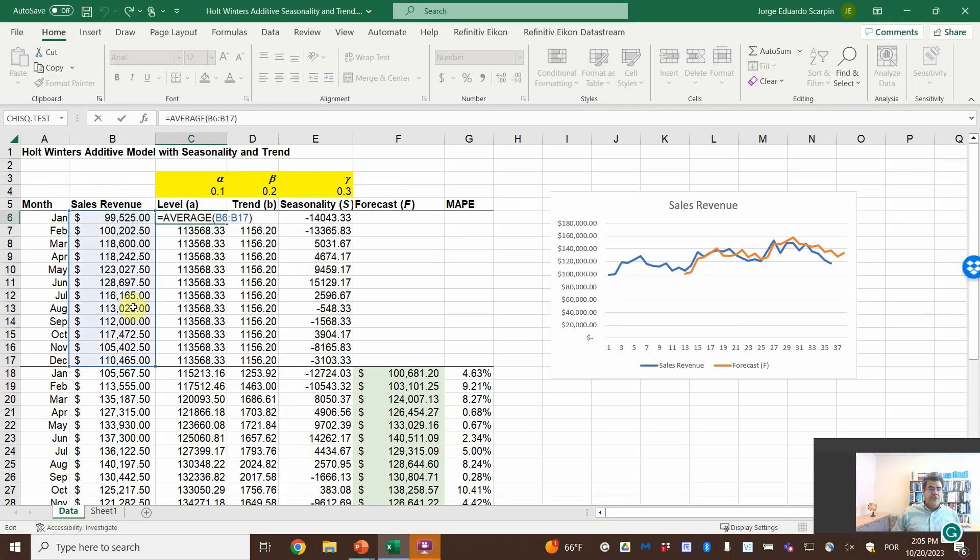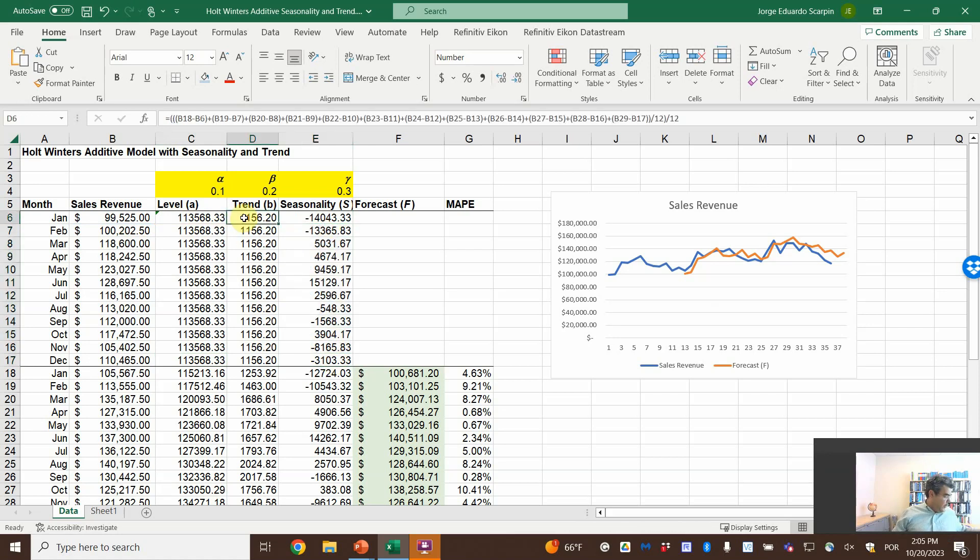The average of the 1st year, and then the same number for all of our month. Seasonality, that is easier. Actual minus level. So actual minus level for all of the 1st year. What about trend?